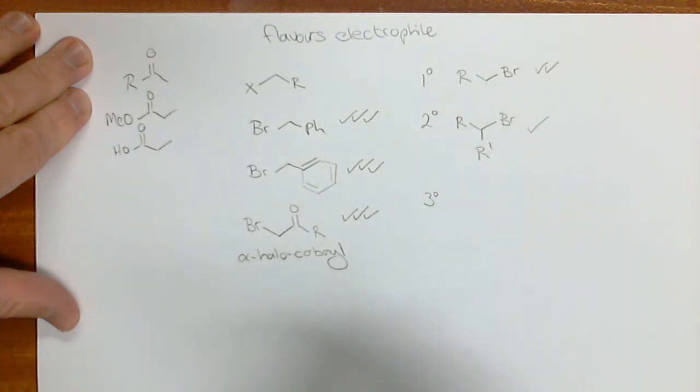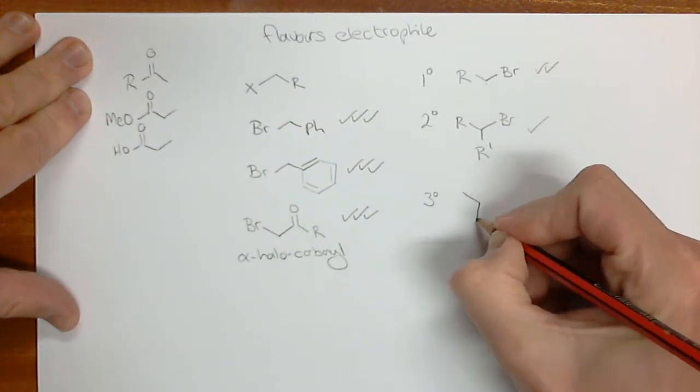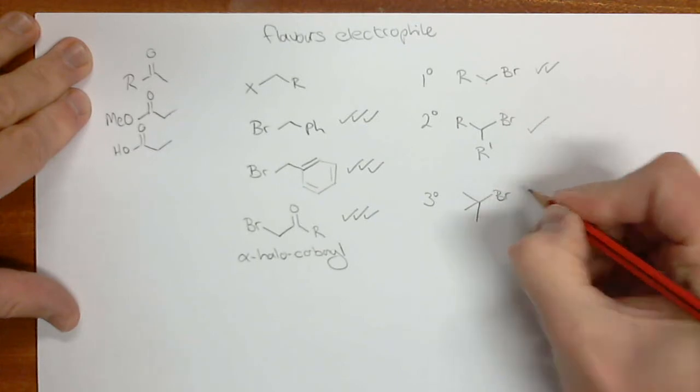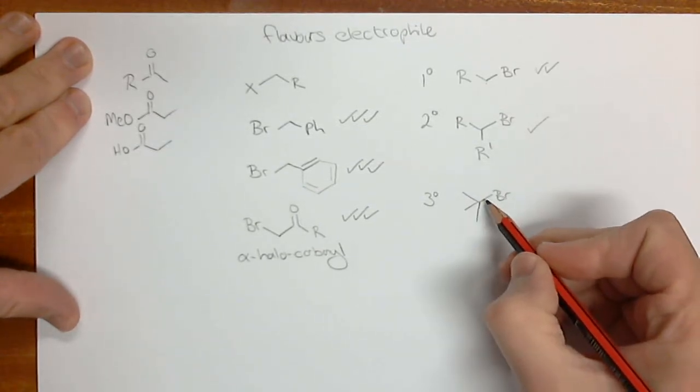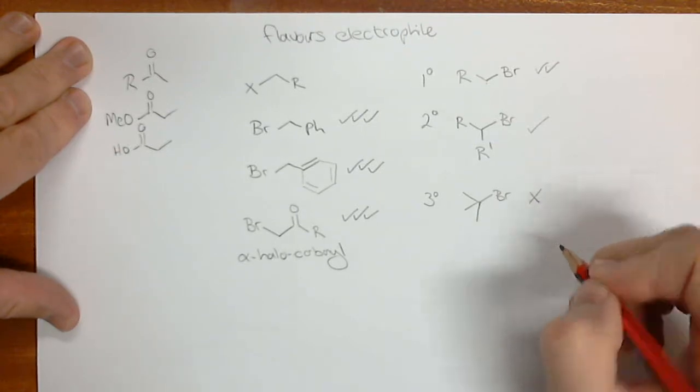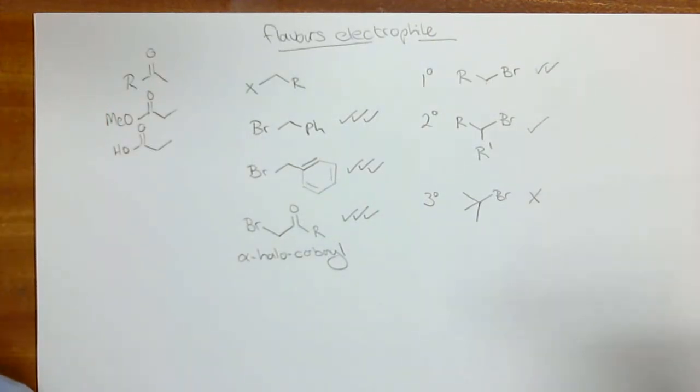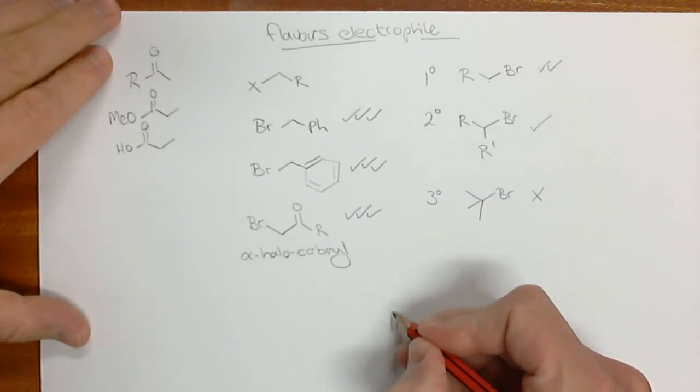Something you won't see in the standard form is a tertiary leaving group like t-butyl bromide. This cannot undergo an SN2 reaction. T-butyl groups do not undergo SN2 reactions, so this does not work at all. This is the flavors of the electrophile up until now, but there's more we're going to learn. The aldehyde group.